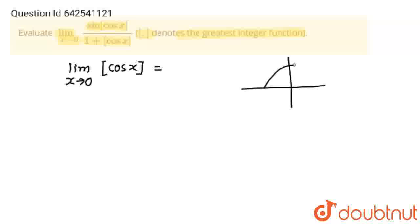This is the graph of cos. At 0, the value is 1. But when x tends to 0, it means that either it will be right hand 0 plus or 0 minus. And at 0 plus and 0 minus,